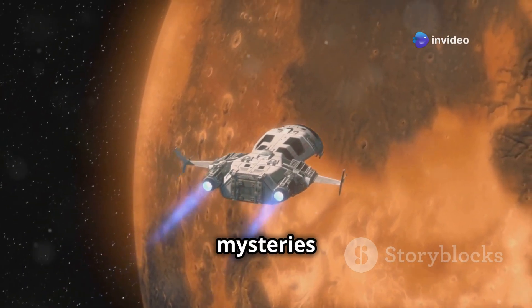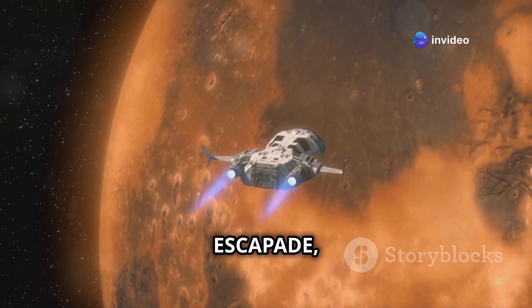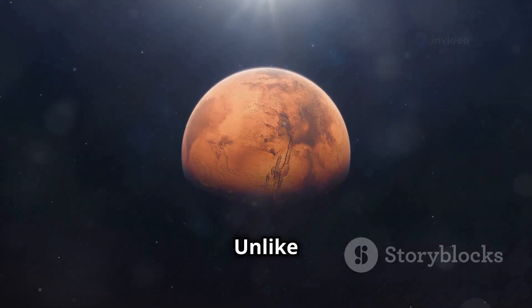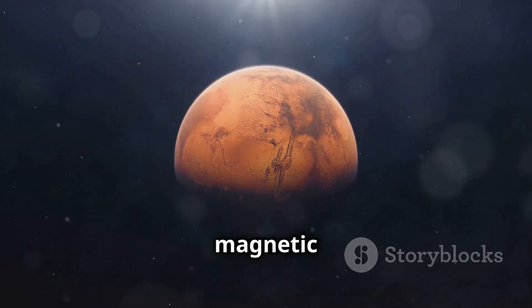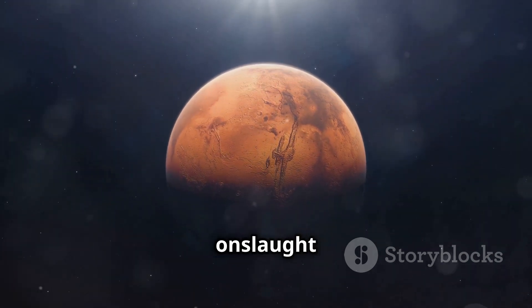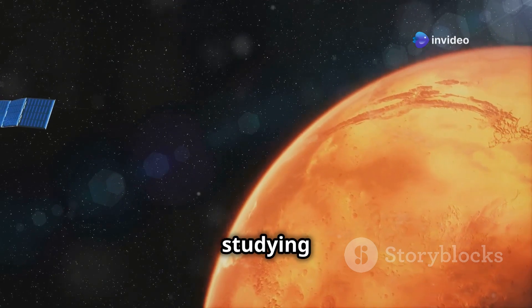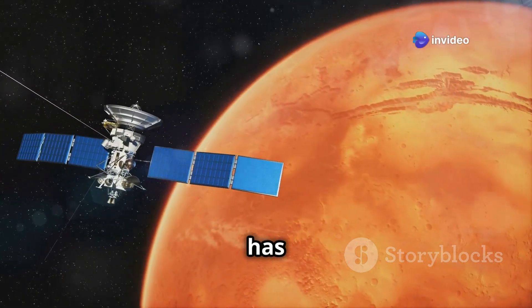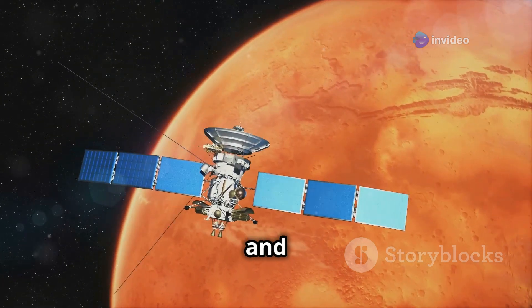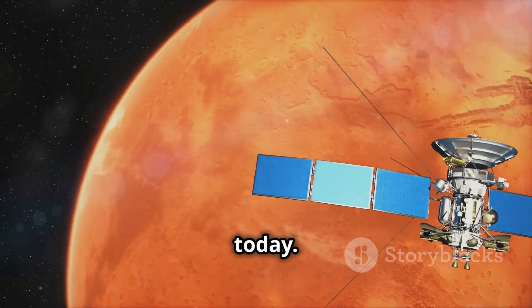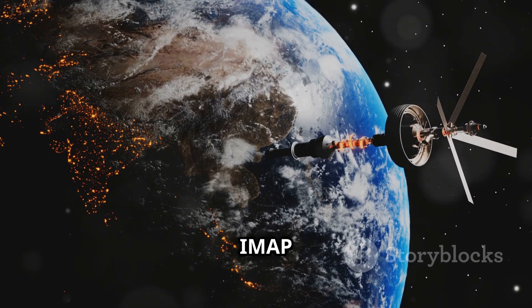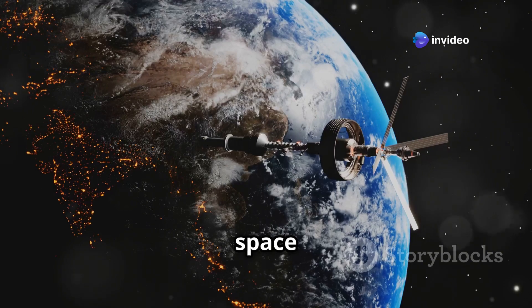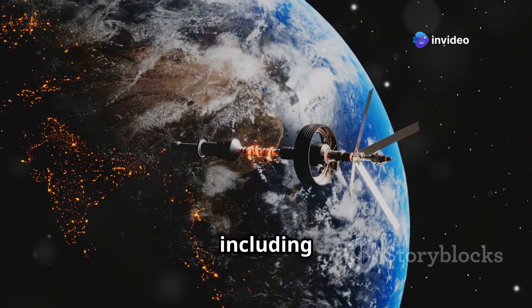Joining IMAP on its mission to unravel the mysteries of space weather is ESCAPADE, a mission heading to Mars to investigate the red planet's magnetosphere. Unlike Earth, Mars doesn't have a global magnetic field to protect it from the onslaught of the solar wind. ESCAPADE will be studying how the solar wind strips away Mars's atmosphere, a process that has been ongoing for billions of years and has turned Mars into the dry, desolate world we see today. These missions, IMAP and ESCAPADE, are like cosmic detectives piecing together the clues about how our sun and the space environment affect planets, including our own.